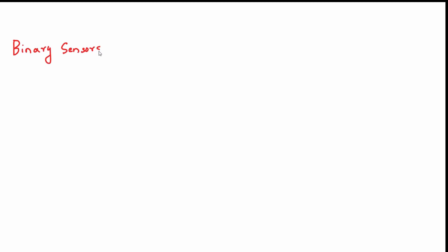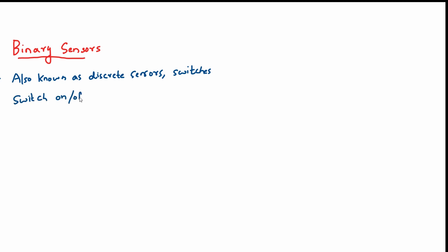Binary sensors are also known as discrete sensors or switches. These are devices that switch on or off as they detect an object and switch to the opposite state when the object is absent. These are used for detecting the presence or absence of an object.